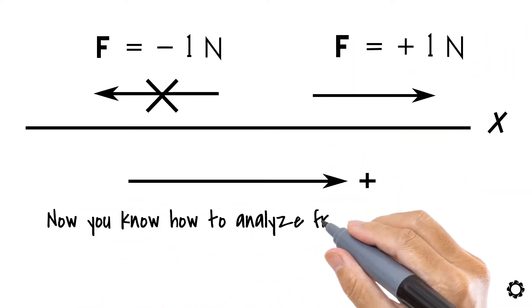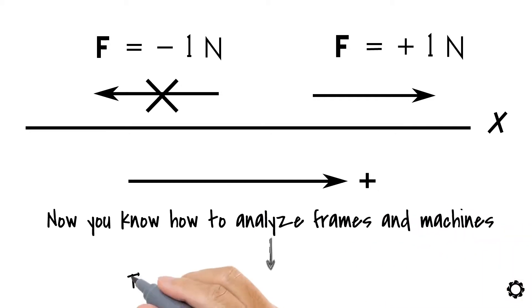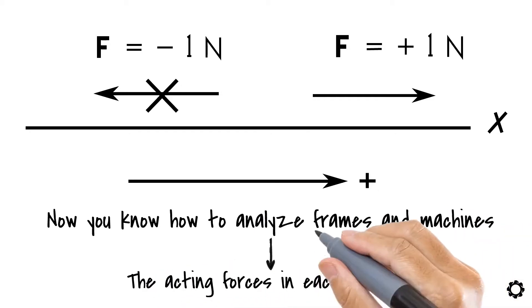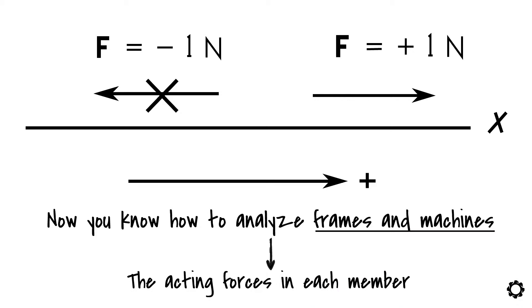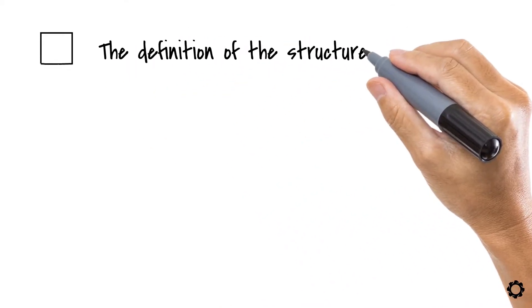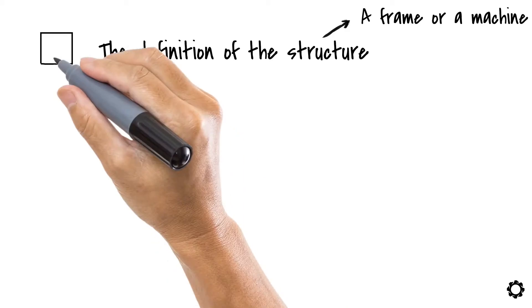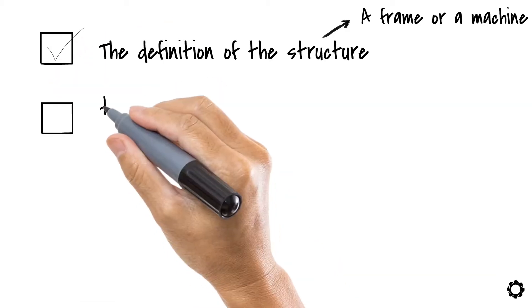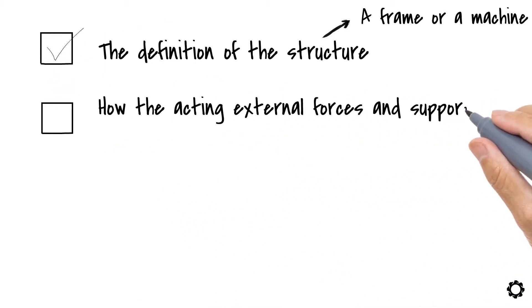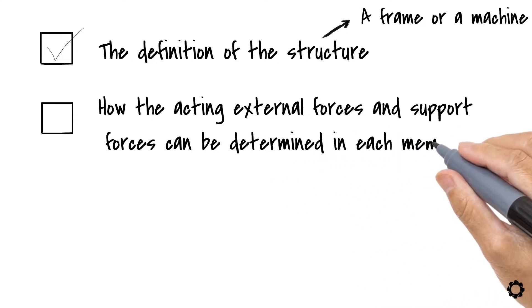Now you know how to analyze frames and machines in order to find the acting forces in each member of the investigated structure. Hopefully after watching this video, you know the definition of the structure which could be either a frame or a machine. You also know how the acting external forces and support forces can be determined in each member of the frame or machine in order to design the members of the investigated system correctly.